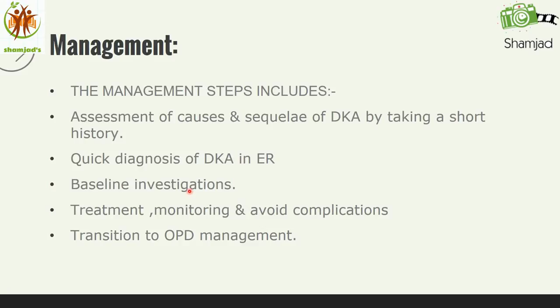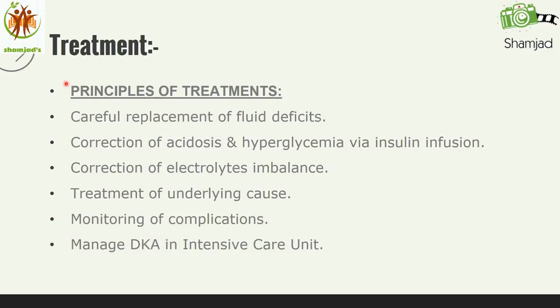For baseline investigations, we need to check blood sugar and ketones, ABG, electrolytes, CBC, and chest X-ray as well. The principles of treatment include careful replacement of fluid deficit. Check for hypovolemic shock. If in shock, consider plasma expanders as a bolus of 20–30 ml per kg. If not in shock, give normal saline 10 ml per kg per hour to restore renal perfusion and blood volume.